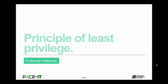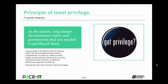We're going to begin with the principle of least privilege. Least privilege is an effective security measure. Unless the top-level administration group is compromised, it is easier to contain a breach. People may get annoyed with the policy of least privilege, as they only have the bare minimum of rights and permissions required to do their job. But your job as the administrator is to avoid a creep in privilege escalation. Don't make exceptions unless it is absolutely necessary.